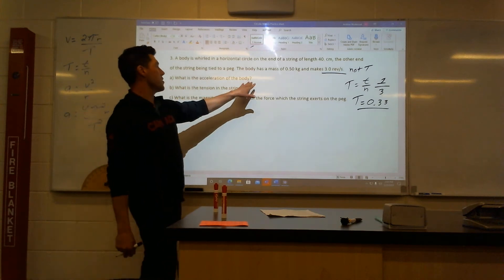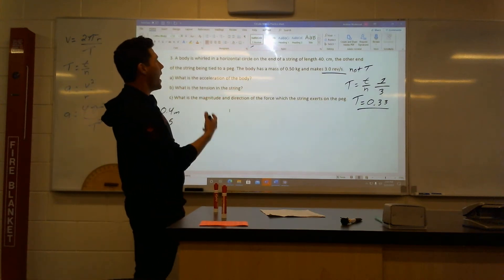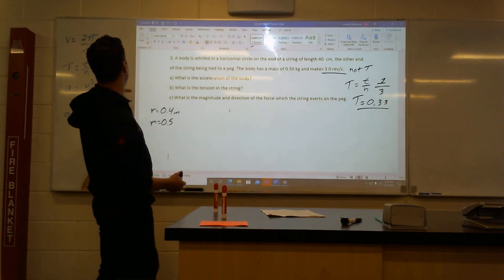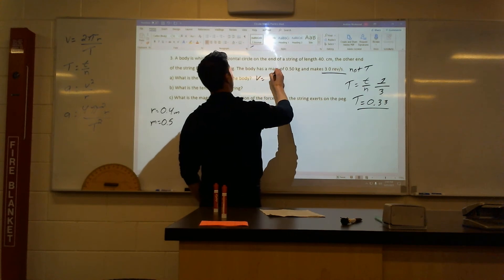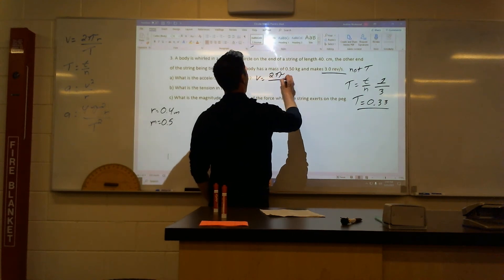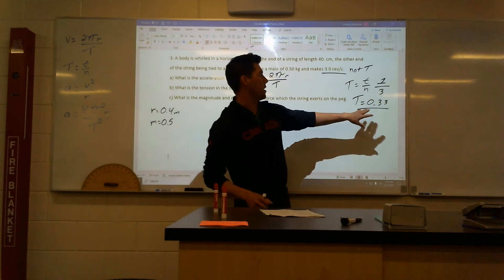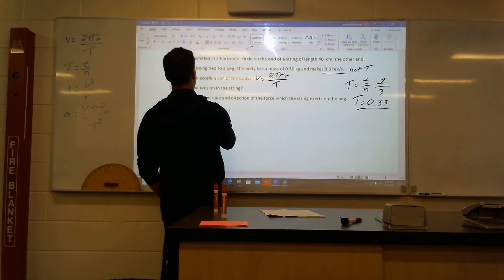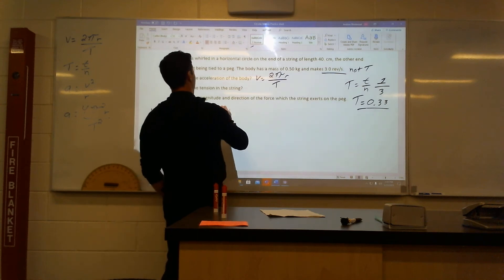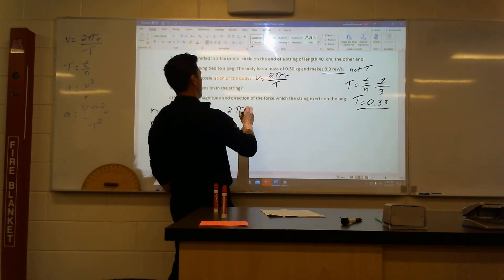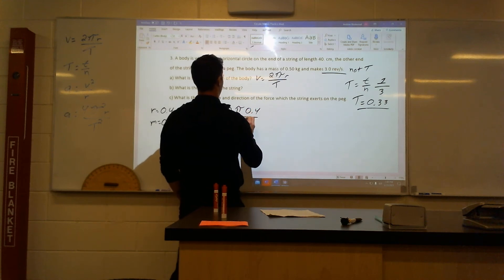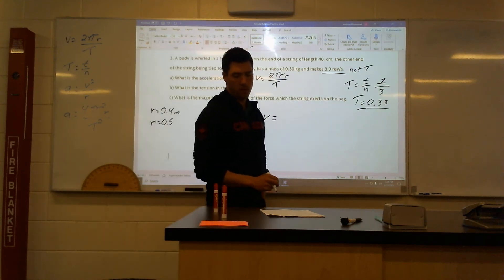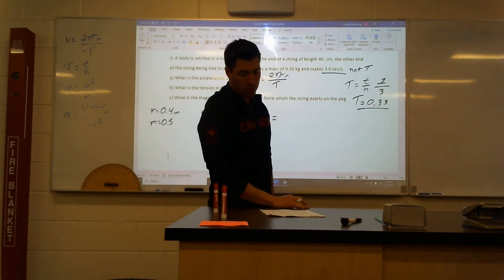How do we find the period? Period is time over the number of revolutions. That's revolutions per second, so I have one second and three revolutions, which means my period is 0.33 seconds. It takes 0.33 seconds to go around this circle once. Now what is the acceleration? I have no velocity given, so I have to figure it out using velocity equals 2 pi r over period. Velocity equals 2 pi times 0.4 divided by 0.33, giving me 7.6 meters per second.